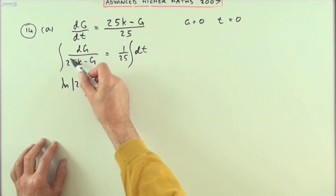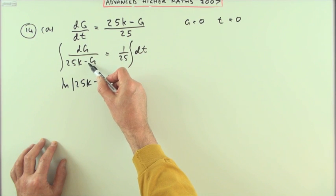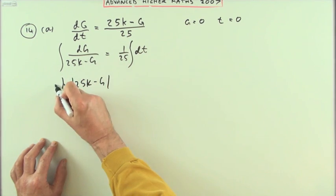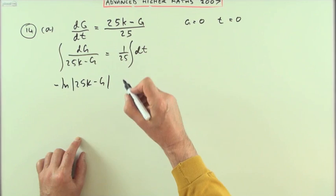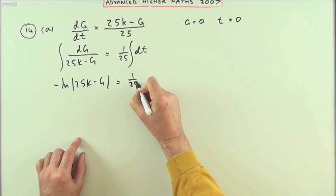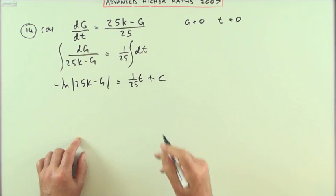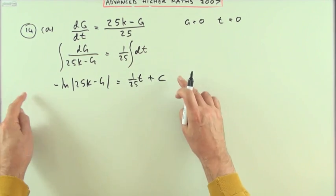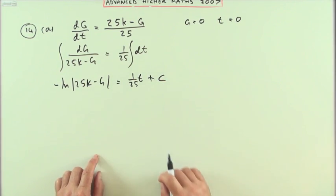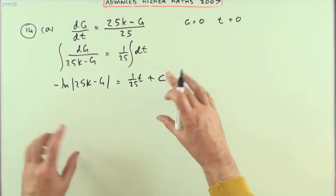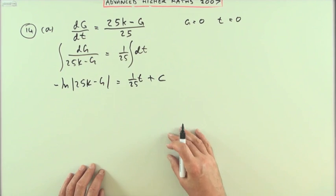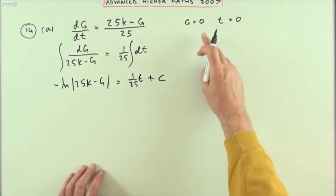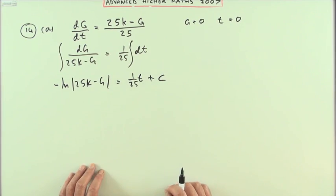It's the logarithm of the lower part, 25k minus g. However it's a linear term. It's got a negative coefficient there so it'll be the negative of that when you divide by that negative one, and that side will just be 1/25th of t plus c. And usually it's just a case of how soon will I work out this value of c? Well I'll let it absorb itself into the equations a bit and then work it out. I think I'll just put the values in just now and see what it comes to.